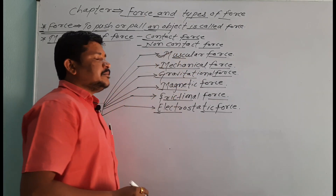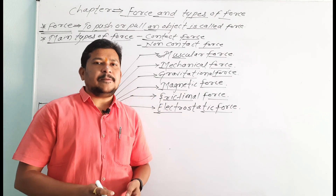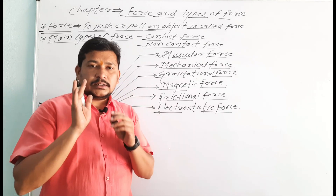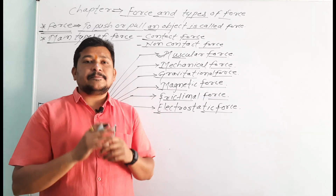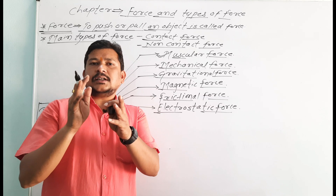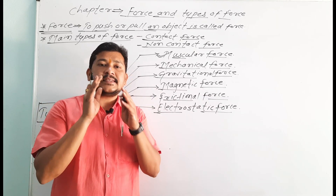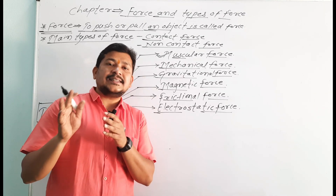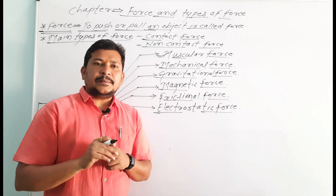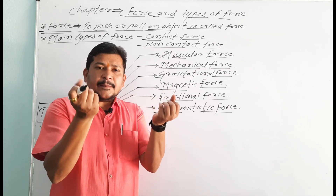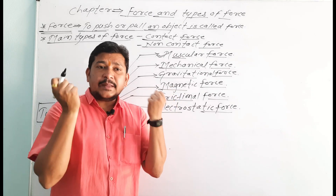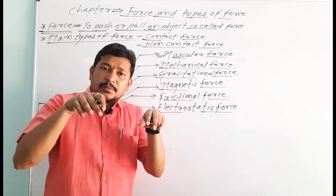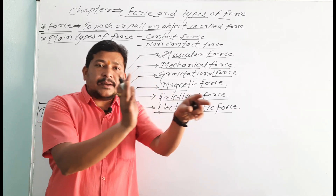Muscular force: the force applied with the help of muscles is called muscular force. जे बल स्नायूंनी लावलो जाते त्याला स्नायू बल असे म्हणतात. Examples: lifting a weight — तुम्हाला वजन उचलायचे असेल तेव्हा आपले हात, body parts वापरतो. Ox pulling a cart — बैल गाडी ओढतो, म्हणजे बैल सुद्धा त्याचे body parts वापरून गाडी ओढतो.